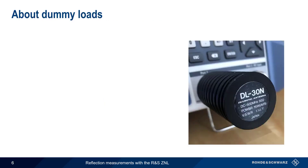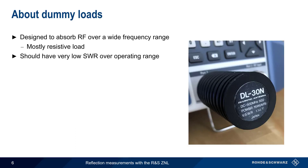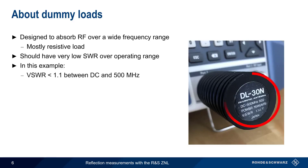Our first example involves testing a dummy load, which is designed to absorb RF energy over a wide frequency range. For this reason, a dummy load is constructed to be mostly resistive, and therefore should have a very low SWR over its operating frequency range. For this particular dummy load, the stated operating range is DC to 500 MHz, and VSWR over this range is specified as 1.1 or less. Note that we've connected the dummy load directly to port 1 of the ZNL instead of using a cable, and therefore we would need to perform calibration directly at the port as well.